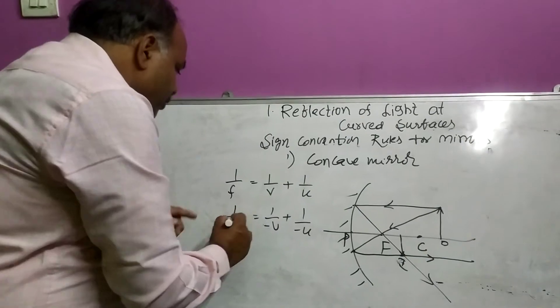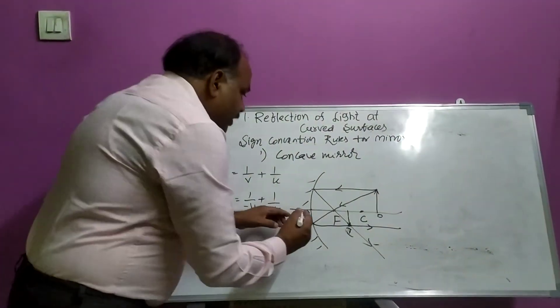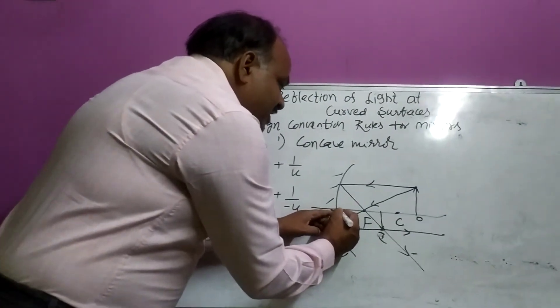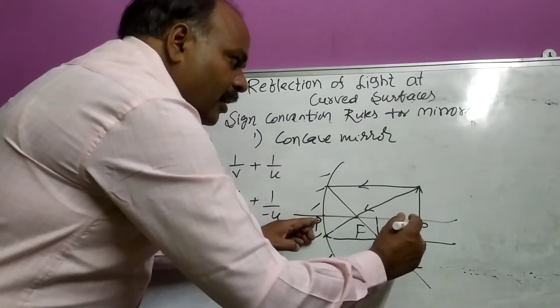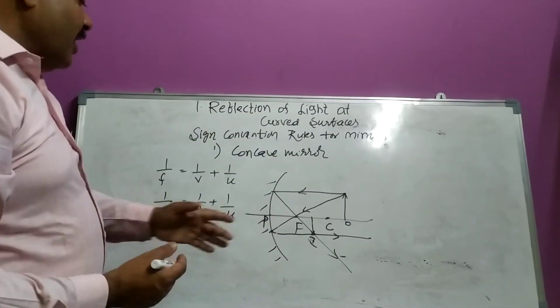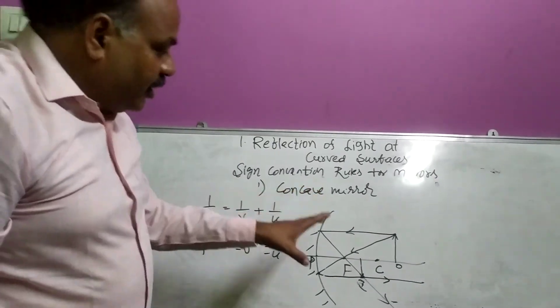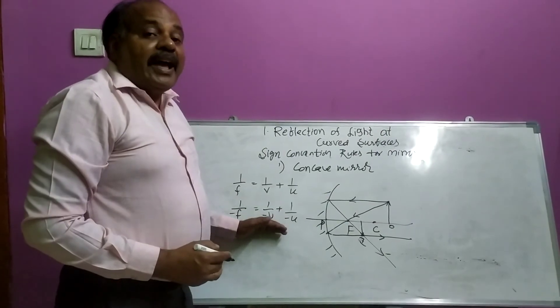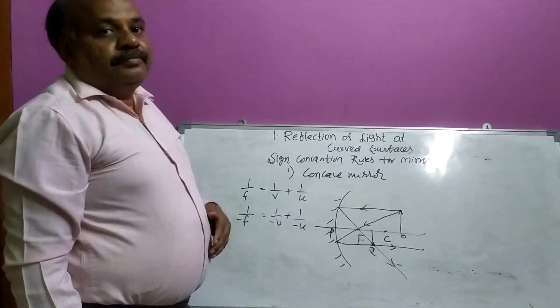Next, 1 by F. F means, focal length. What is focal length? From P to F is focal length. Now, we are taking this distance from P to F in this direction. At the same time, incident ray is in opposite direction. So, this focal length here, we are taking as negative. So, for this particular situation, this rule is converted as like this by applying sign convention rules.